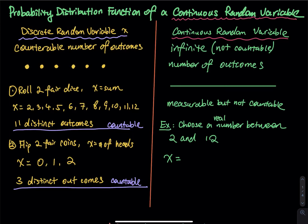For example, when you flip two fair coins, you cannot say I want to get 0.8 heads — that is impossible. So x is zero, one, and two. Zero has its probability. One and two each have their own probability. There are three distinct outcomes.